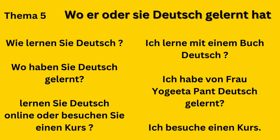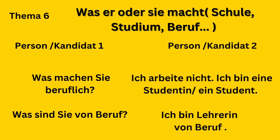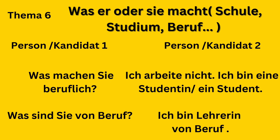Now Theme 5: Wo sie Deutsch gelernt haben. You can ask: Wie lernen Sie Deutsch? Answer: Ich lerne mit einem Buch Deutsch. Or: Wo haben Sie Deutsch gelernt? Answer: Ich habe von Frau Yogita Deutsch gelernt. Or: Wie haben Sie Deutsch gelernt? You can also ask: Lernen Sie Deutsch online oder besuchen Sie einen Kurs? Answer: Ich besuche einen Kurs. It is not necessary to use all the questions — you can ask only one or two.